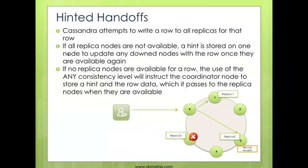If one of the nodes in your database cluster is down, Cassandra uses what's called the hinted handoff methodology. If a node is down during a write, one of the nodes responsible for that data will store a hint for the down node. When the down node comes back online, it receives a copy of that row so that it's brought up to date.